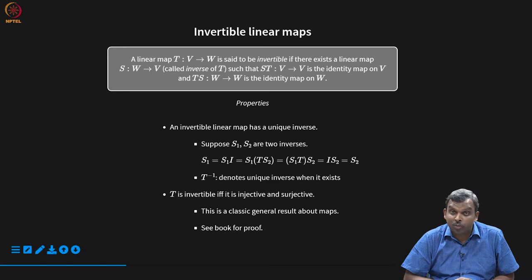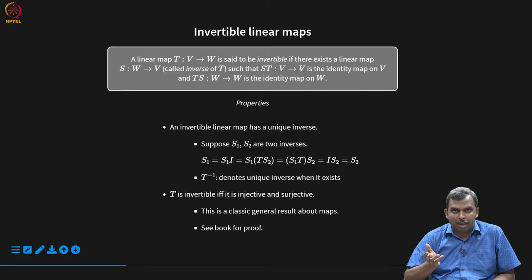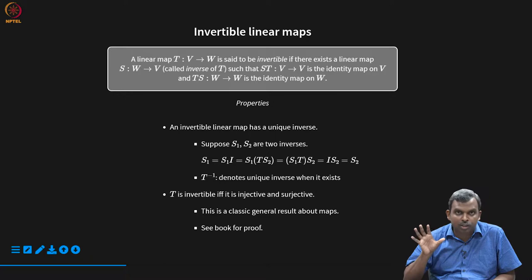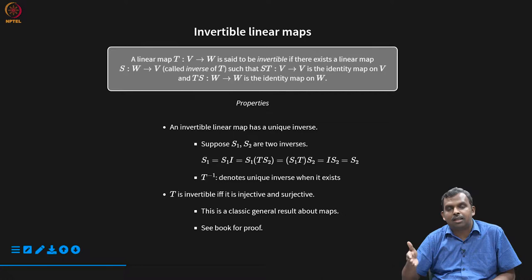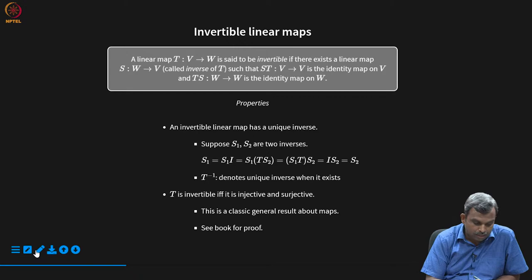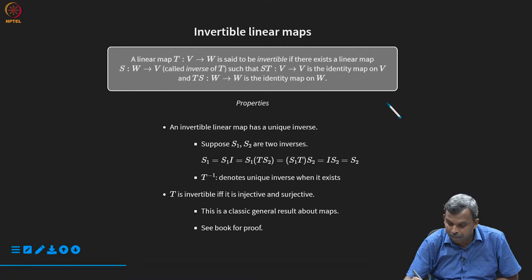A linear map T from V to W is said to be invertible if there is a linear map S from W to V — from the output side to the input side — called the inverse of T, satisfying two conditions. First, S composed with T gives the identity map on V. Second, T composed with S gives the identity map on W. A picture is in order here to illustrate this.